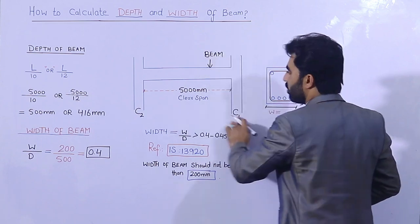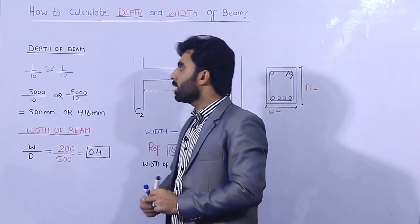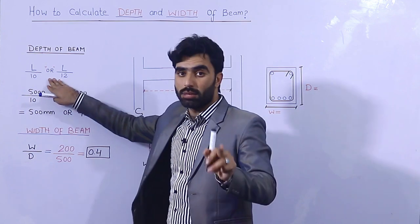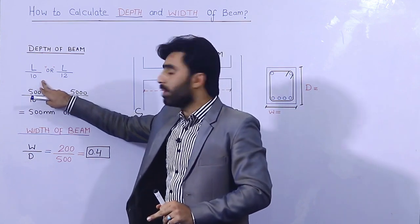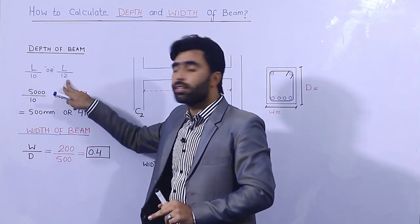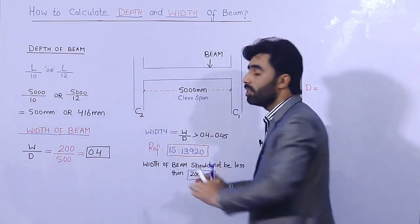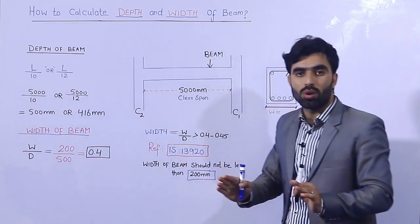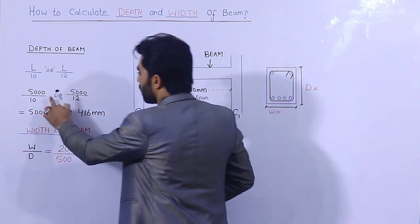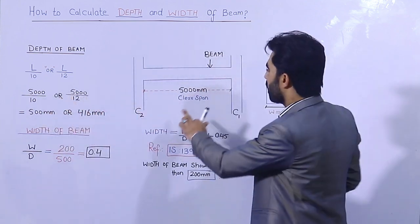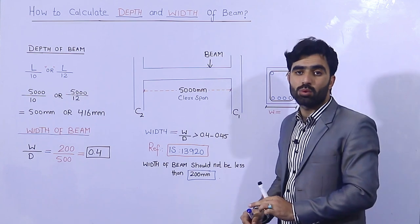This is the beam, this is column 1, and this is column 2. We have the formula: by thumb rule, depth of the beam equals L divided by 10, or L divided by 12, where L is the clear span between two columns.